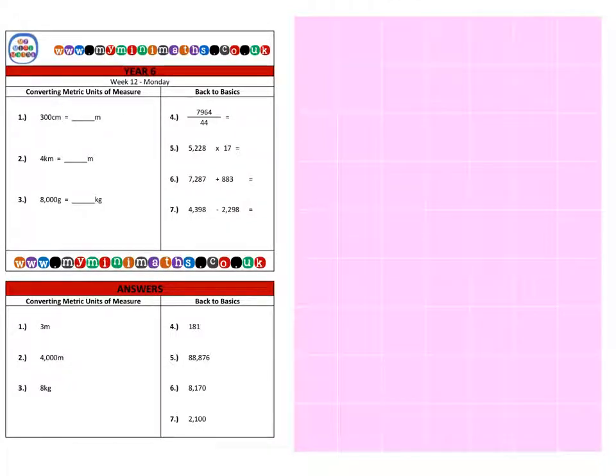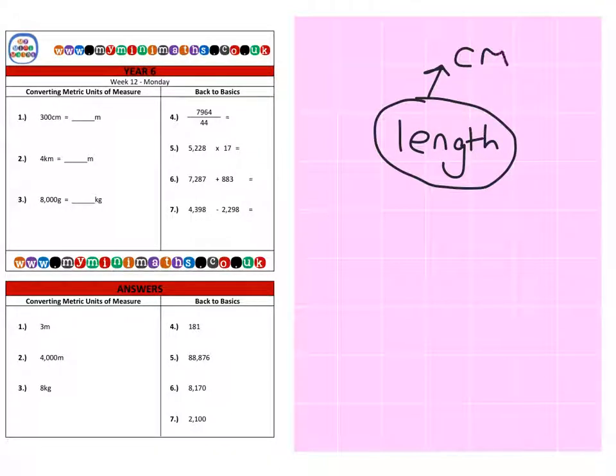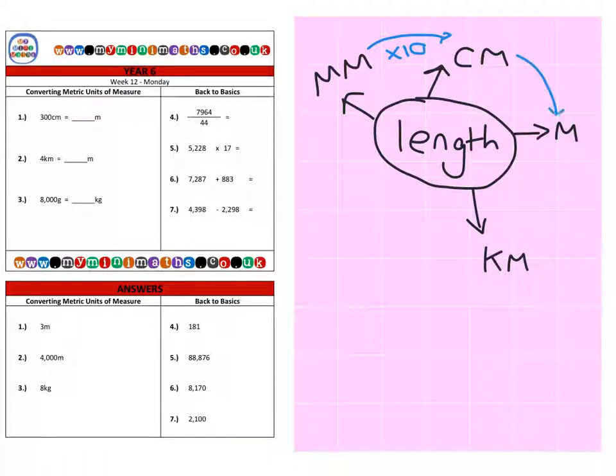First of all, if we're going to look at length, we have millimeters, centimeters, meters, and kilometers. There are 10 millimeters in a centimeter, we have 100 centimeters in a meter, and finally we have 1,000 meters in one kilometer.